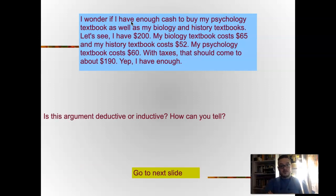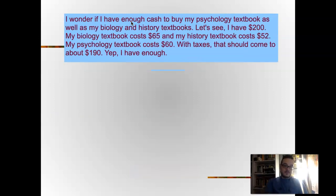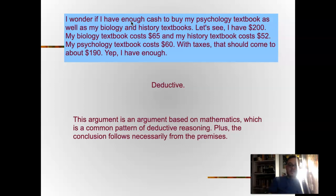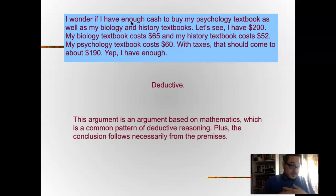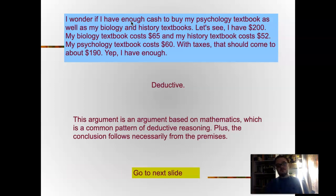Next: 'I wonder if I have enough cash to buy my psychology book as well as my biology and history textbooks. I have $200. My biology textbook costs $65, my history textbook costs $52, my psychology textbook costs $60 — with taxes it's $190. Yes, that's enough.' This argument is deductive because of the math. If you have a mathematical argument, it's a deductive argument. Math is deductive logic by definition, and the conclusion necessarily follows from the premises: he has $200, the textbooks cost less than $200, therefore he can buy his textbooks.